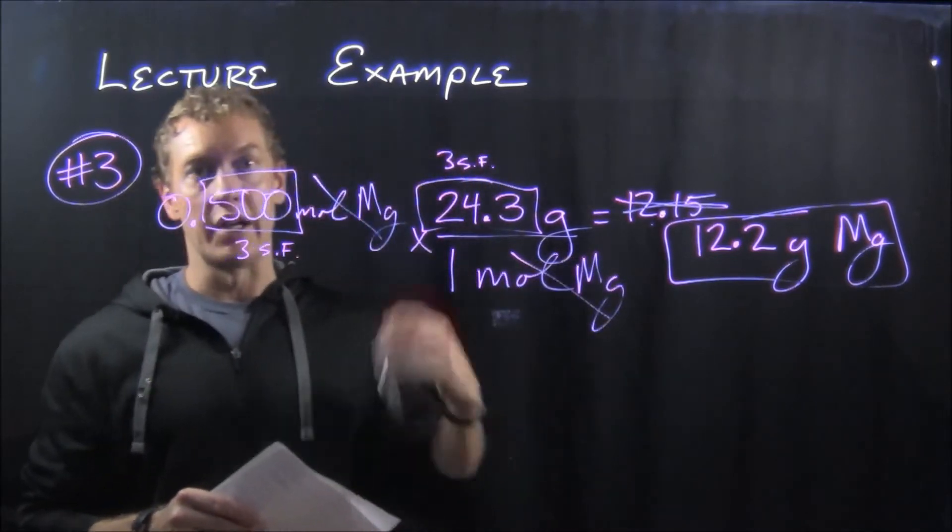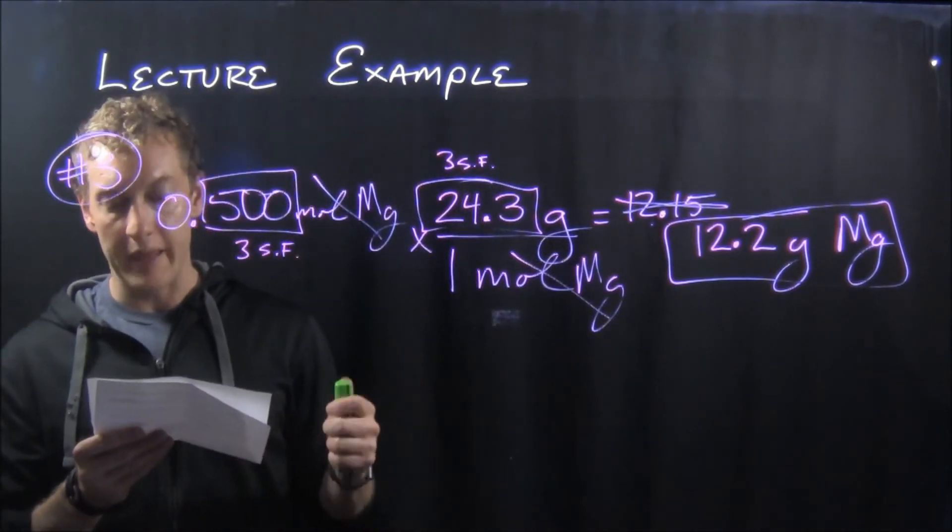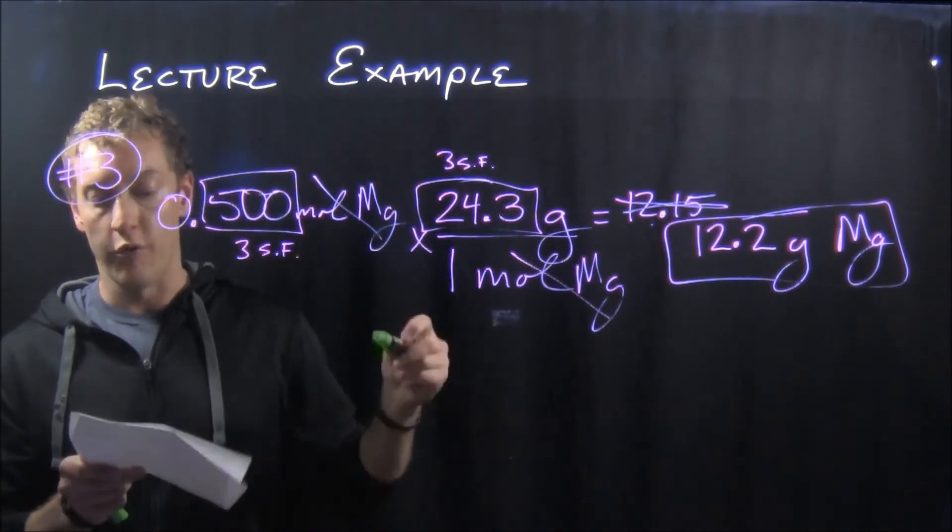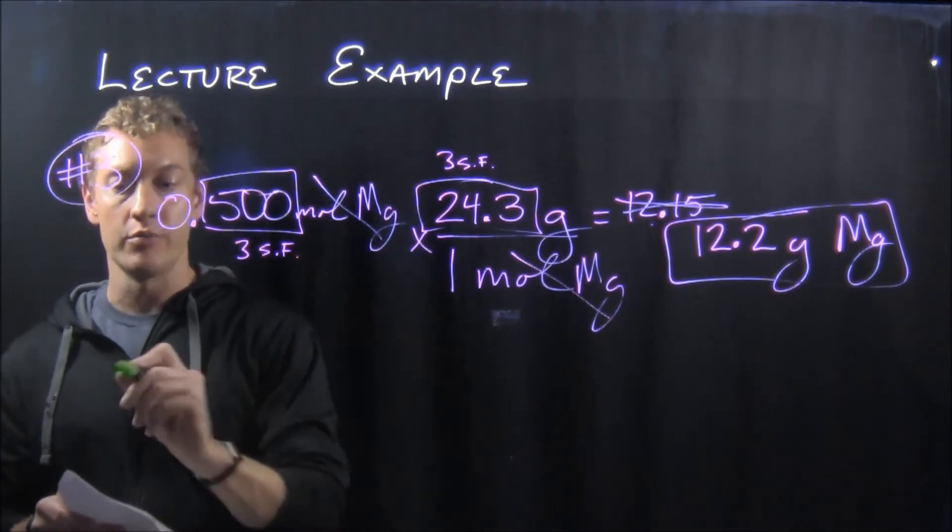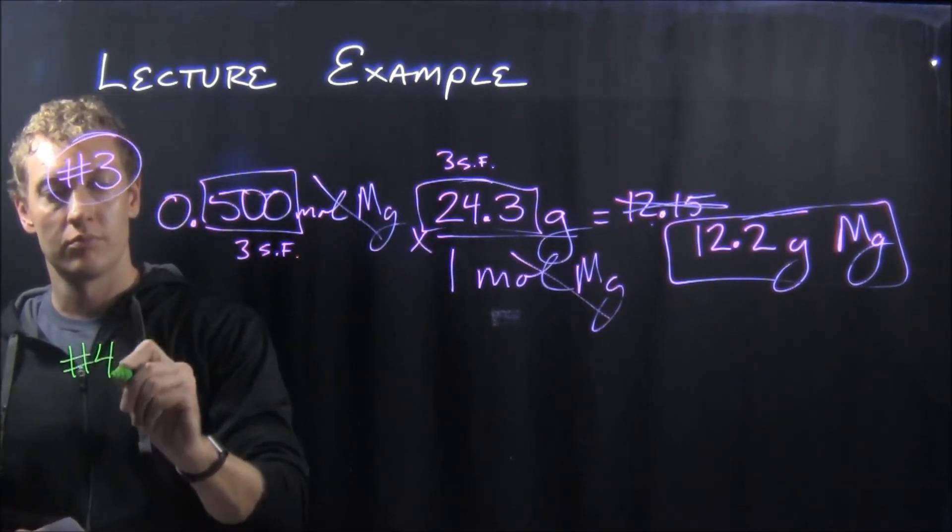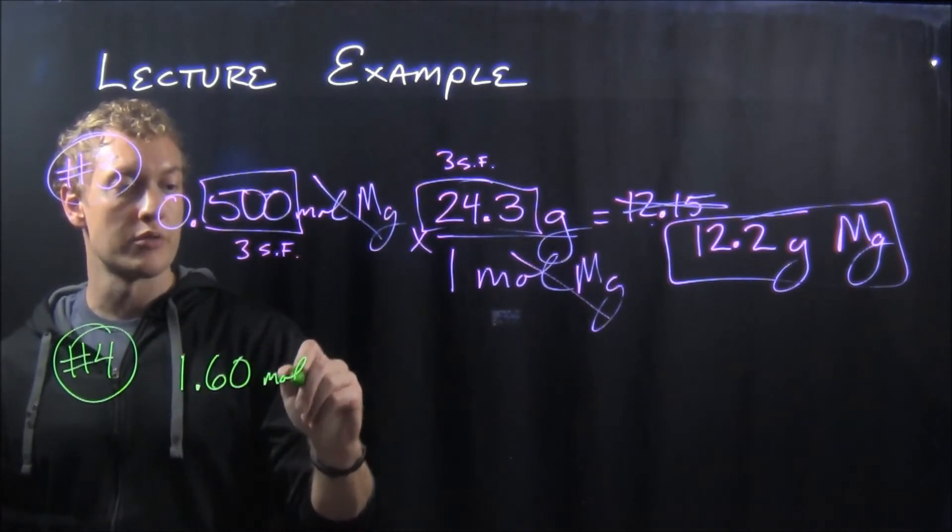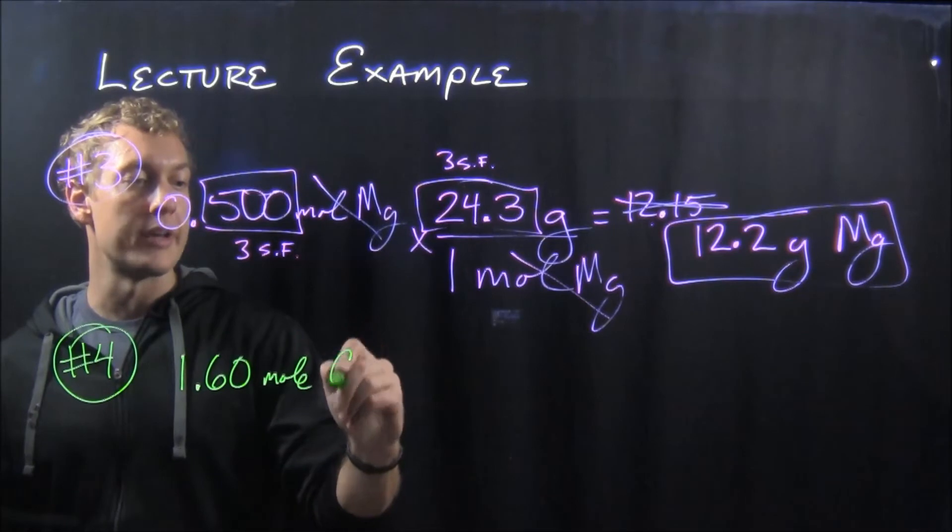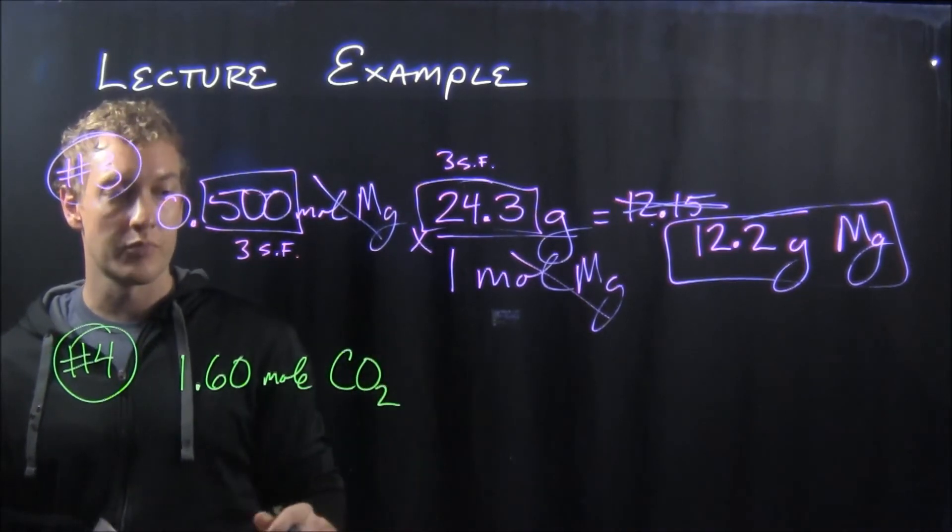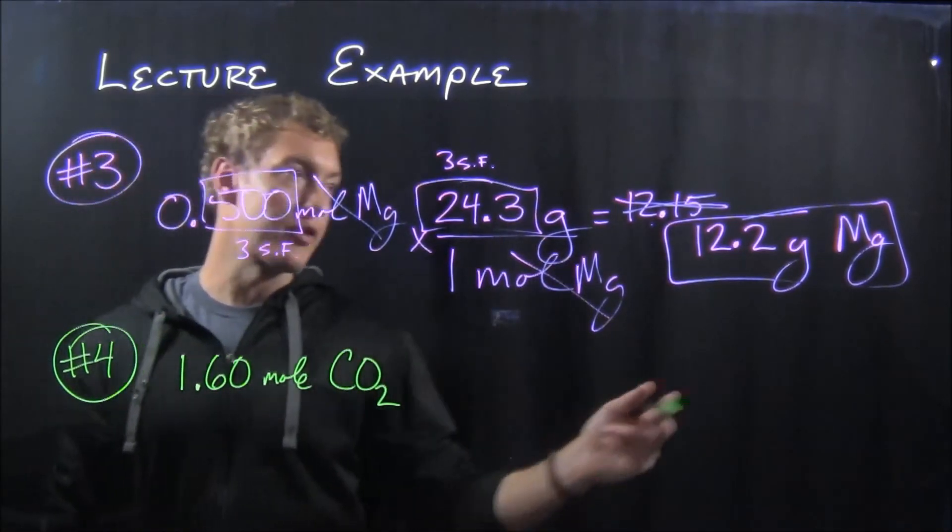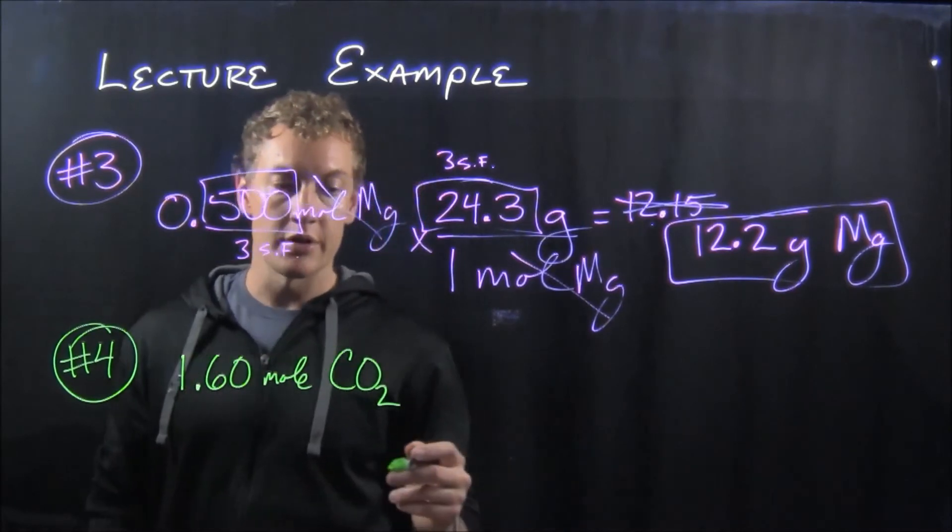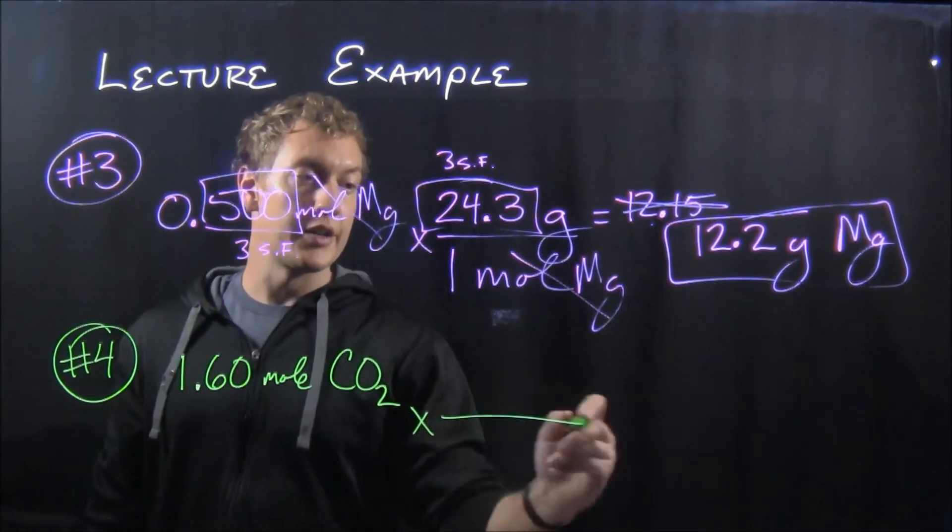Going on to lecture example number four, it asks for the mass of 1.60 moles of carbon dioxide. So we'll follow the same pattern - we'll end when we have grams, so we're going to multiply it so we want moles to cancel, so it's one mole on the bottom...